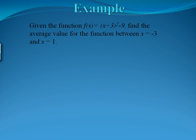The first step is to set up our basic integral for average values, which looks like this. So we have 1 divided by 1 minus negative 3, be careful with your negative numbers, times the area under the curve from negative 3 to 1.